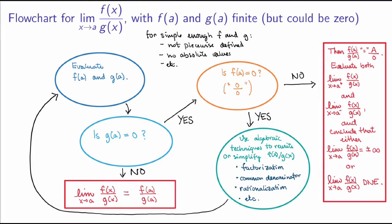Let me now present a very useful flowchart for evaluating the limit of a quotient f(x)/g(x) as x goes to a. I'll assume that both f(a) and g(a) are finite, and that f and g are simple enough functions — no piecewise-defined functions or absolute values. This seems restrictive, but most functions we'll be interested in fall into this class, or can be rewritten as such by putting things on a common denominator.